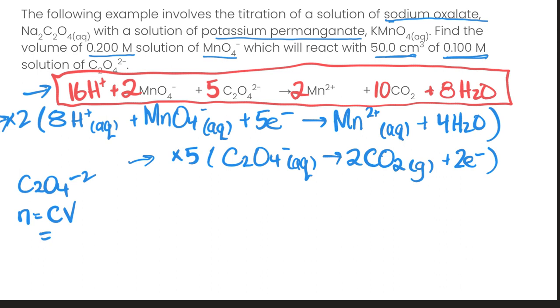So plugging in here, we have 50.0 cm³, which is 50 mL, or in liters that's 0.0500, and then our concentration is 0.100. That's going to give us 0.005 moles.